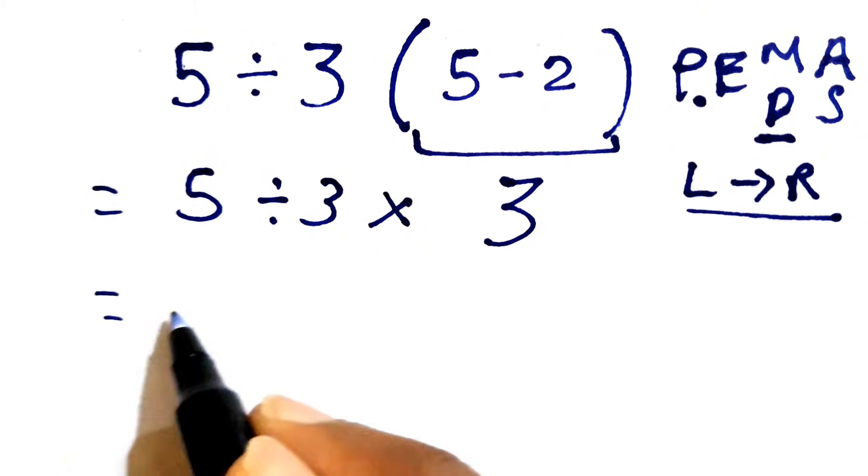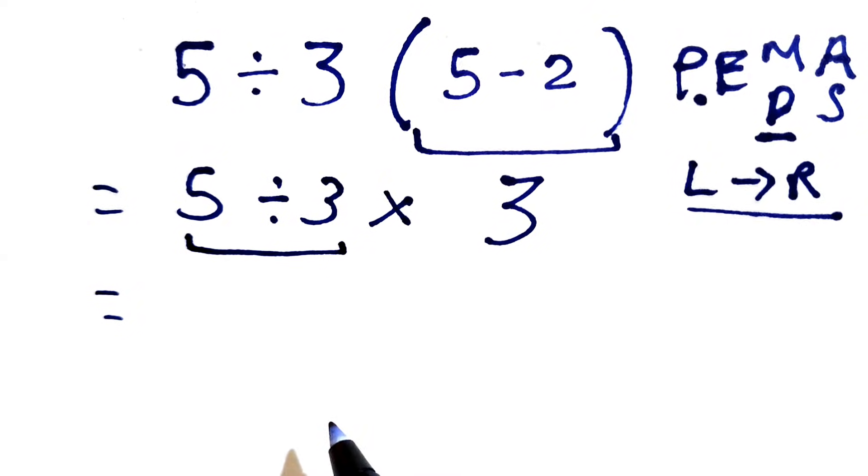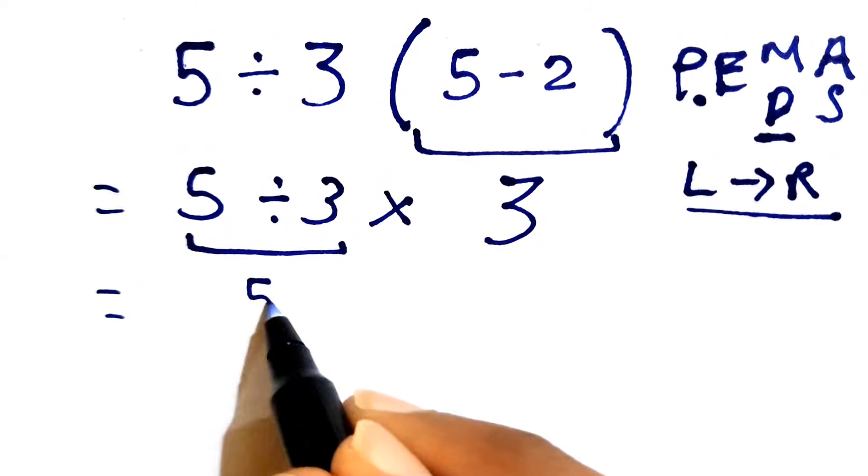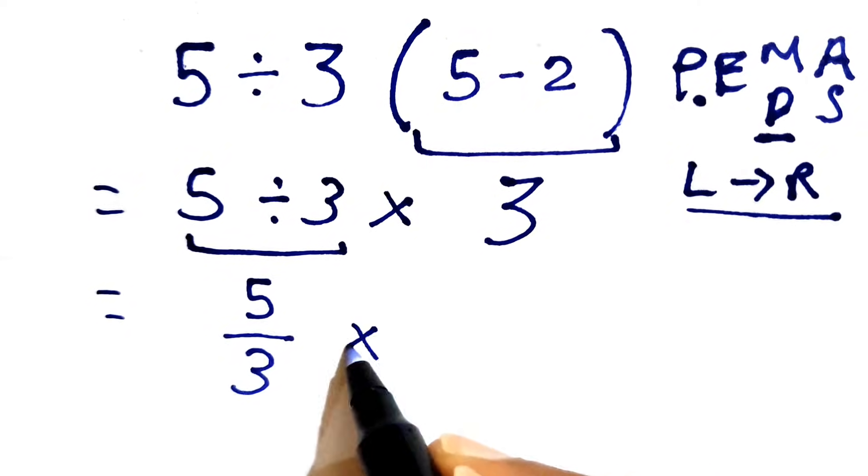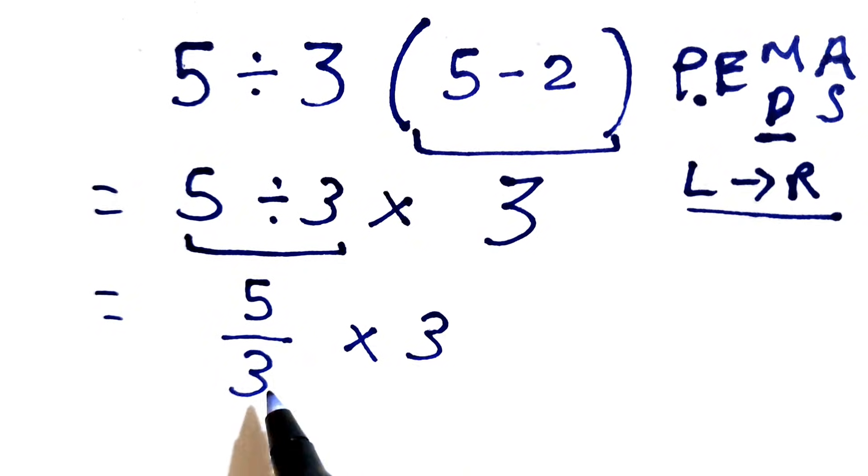We'll solve this 5 divided by 3, that can be written as 5 over 3. And now we'll write times 3, so we have 5 over 3 times 3.